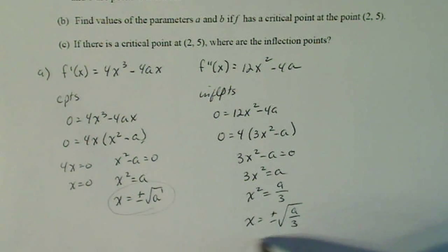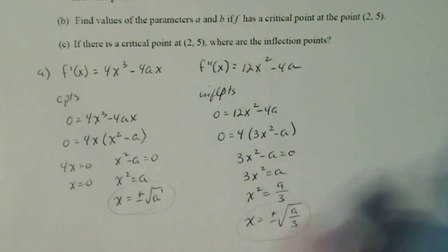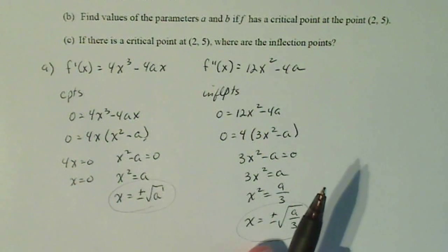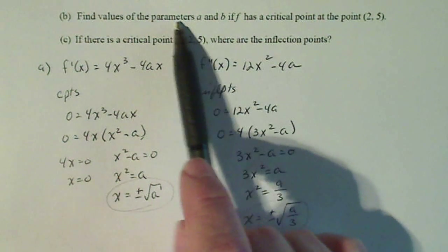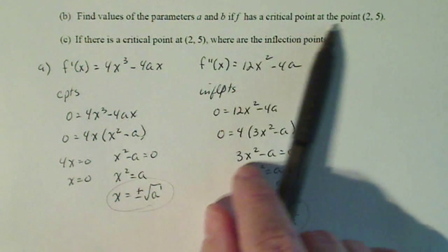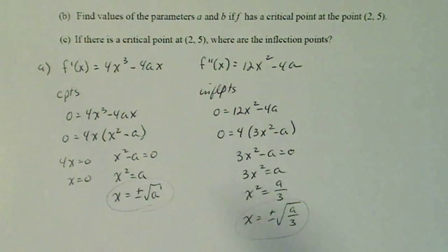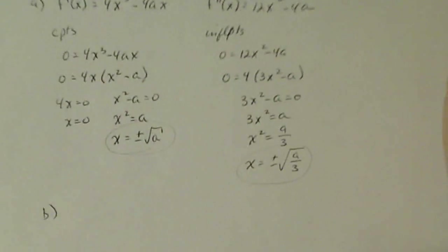So these two critical points are going to be important for part b, which says, find the values of the parameters a and b if f has a critical point at the point (2, 5). So part b, if there's a critical point at (2, 5), two things are going to happen.